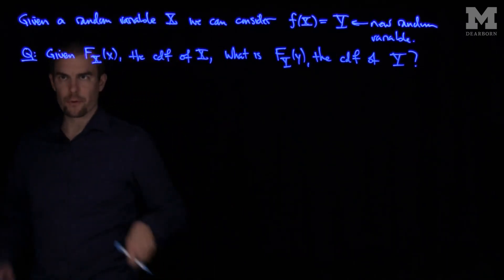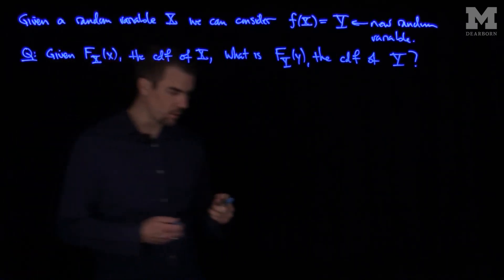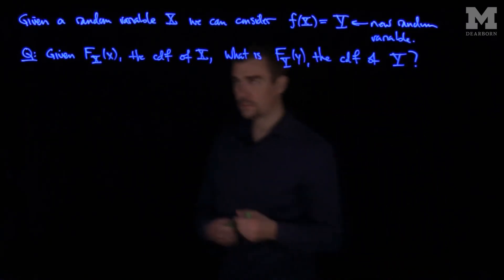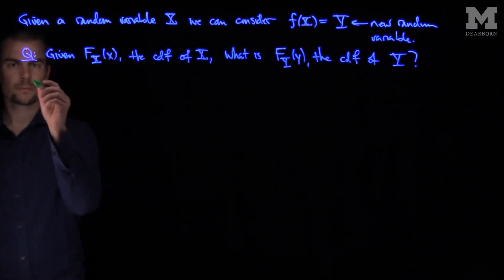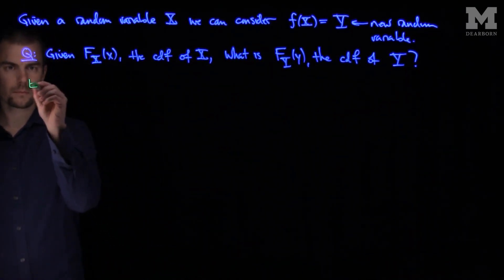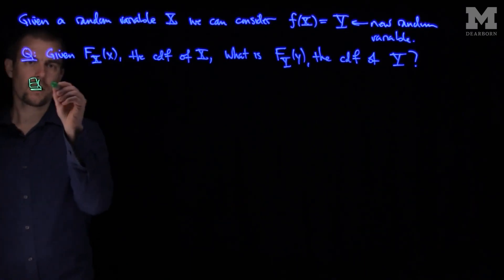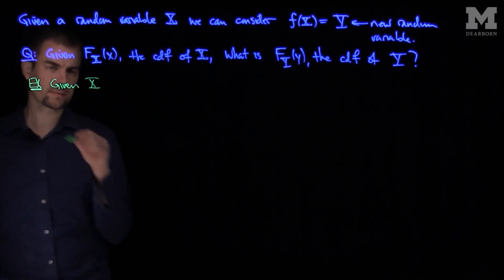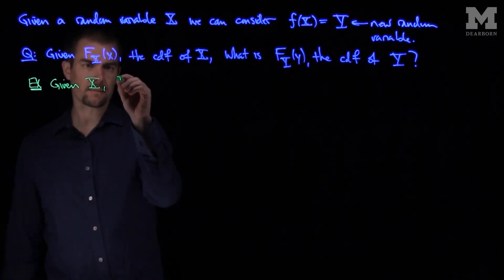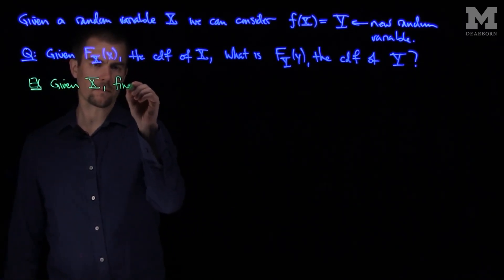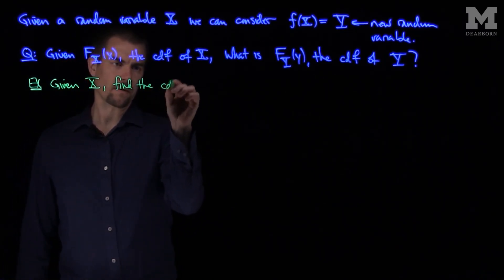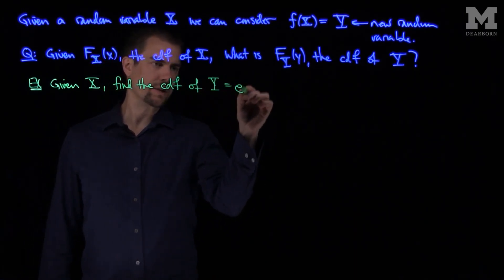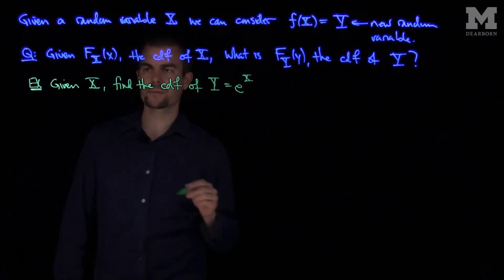We'll do this with an example first, and we'll see how the example can generalize. Here's the example: if we're given a random variable X, find the CDF of Y = e^X.